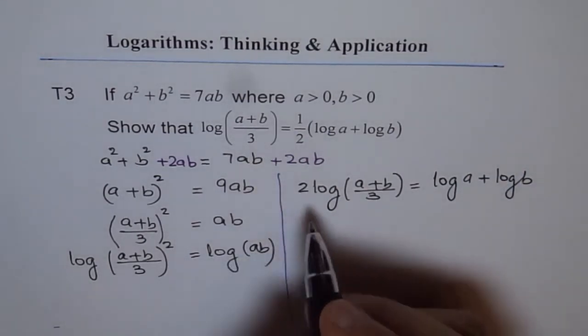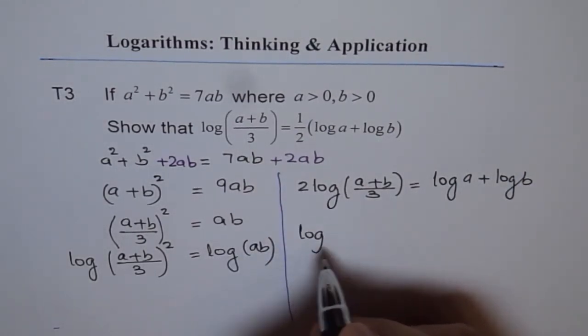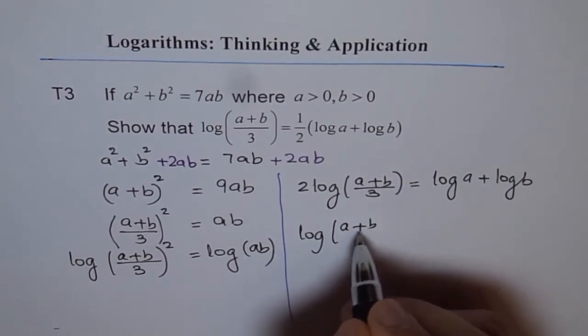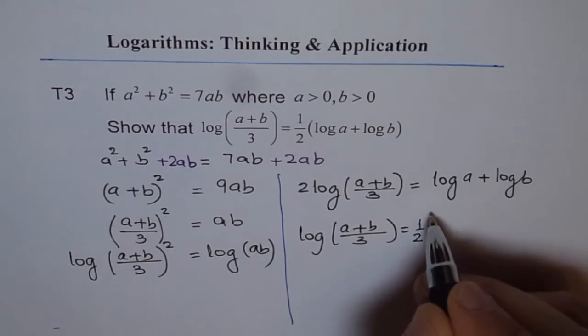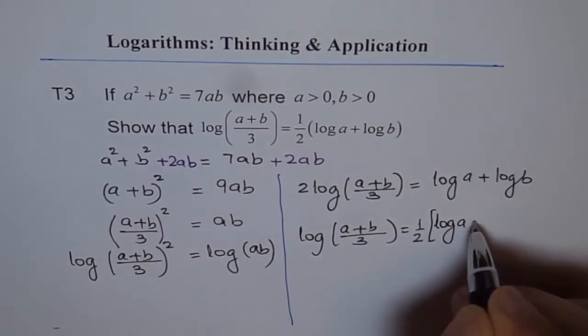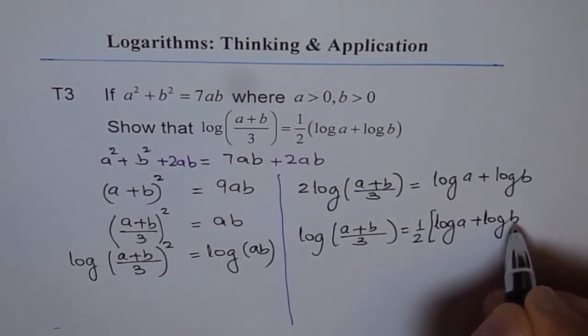And now I get the result dividing by 2. So we get log of a plus b over 3 equals to half of log a plus log b.